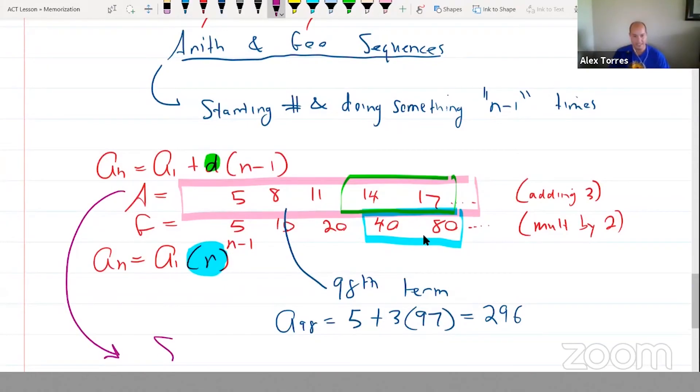And one last thing to add to our conversation about sequences: for the arithmetic sequence, the sum of n numbers is n over 2 times (a₁ plus aₙ). So for instance, if I wanted the sum of the first 98 terms, that would be 98 over 2 times (5 plus 296), and whatever that simplifies to, that would be the sum of the first 98 terms.